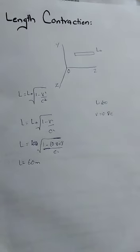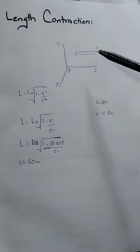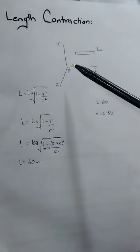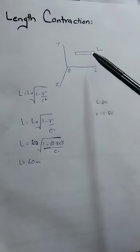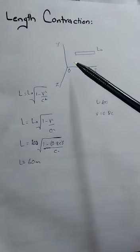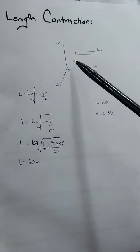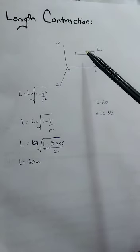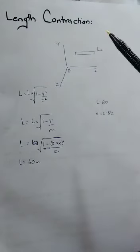Let's consider a rod which is in a frame of reference that is in a state of rest. An observer in that frame of reference measures the length of the rod, and this is the actual length of the rod, denoted by L0.